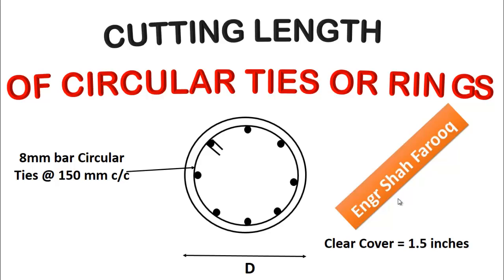Circular columns are most commonly used in buildings. In circular columns, the transverse reinforcement is provided in the form of rings known as ties or in the form of spirals or helical.